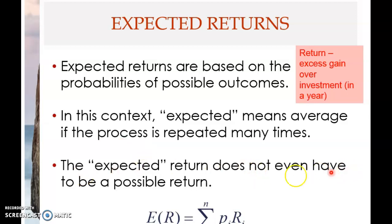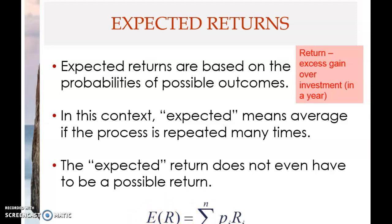The expected return does not even have to be a possible return. This is the formula for expected return. The book uses capital E for expected and capital R, but I prefer using small r with a hat — it's the same thing.